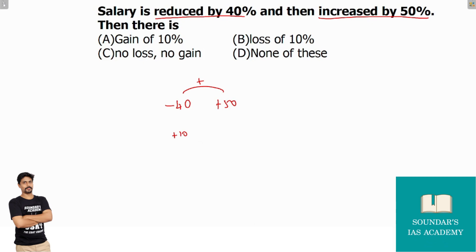Second step: multiply minus 40 and 50. The result is minus 20. Divide by 100. That's the answer.